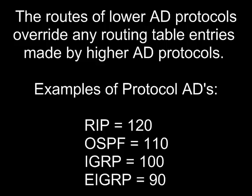Examples of protocol administrative distances are: RIP with an AD of 120, OSPF with an AD of 110, IGRP with an AD of 100, and EIGRP with an AD of 90.